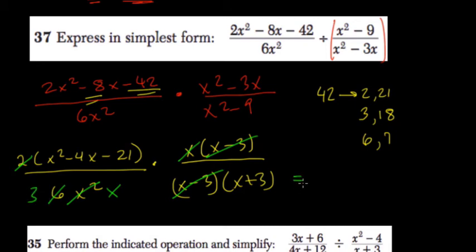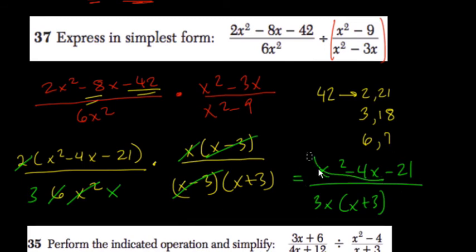We're almost done now, because we have x² - 4x - 21 all over 3 times x times (x + 3). But fortunately, this numerator can be factored a little bit.